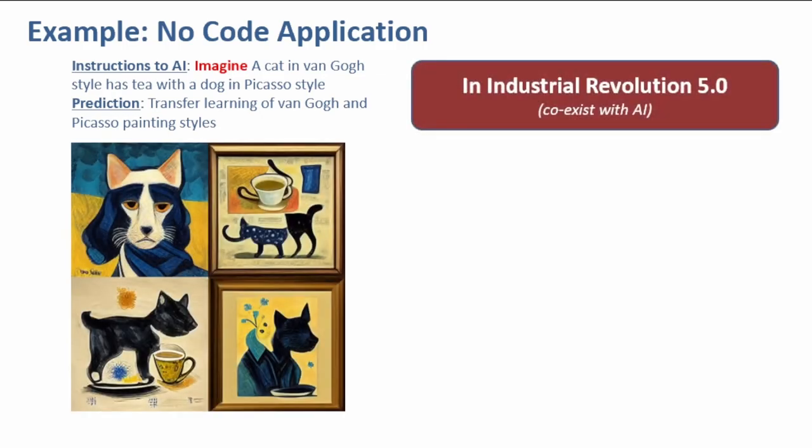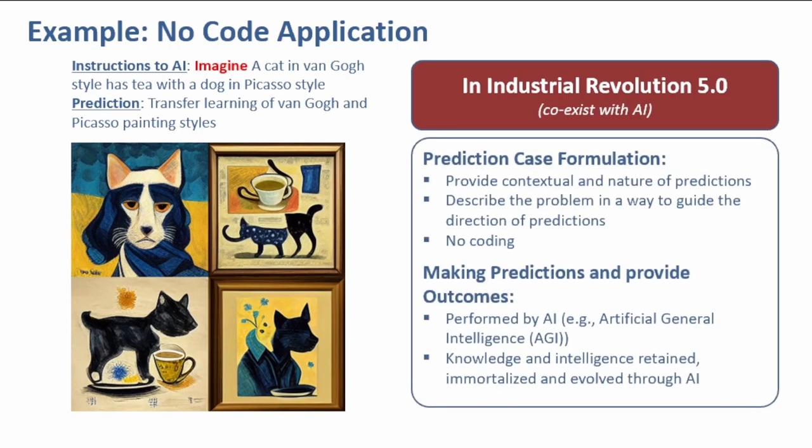In Industrial Revolution 5.0, AI would take over prediction with its superior computing power. We only need to define the prediction problem statement without compromising due to the limitations of the prediction methodology.